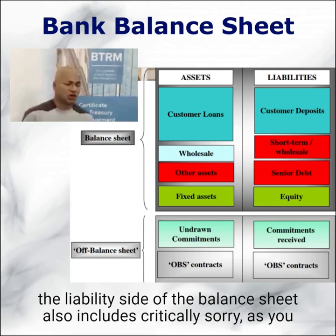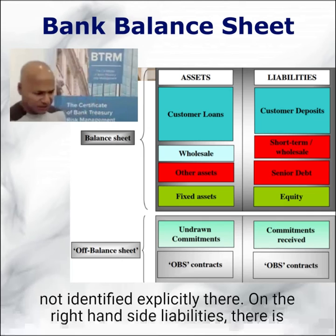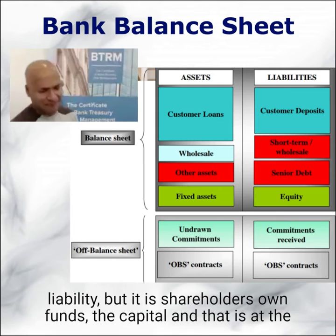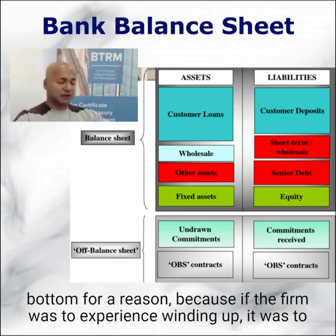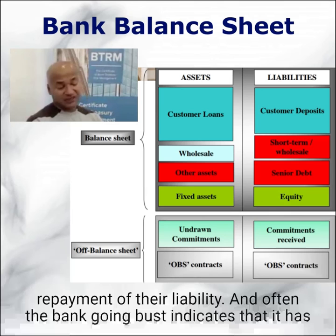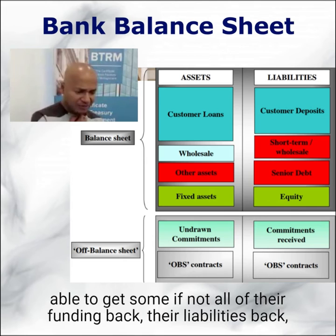But both sides of the balance sheet include critically two items not explicitly identified there. On the right-hand side liabilities, there is the equity and capital of the bank — it's a liability, but it is shareholders' own funds, the capital. That is at the bottom for a reason, because if the firm was to experience winding up, administration, or bankruptcy, they are at the bottom of seniority for repayment. Often the bank going bust indicates it's run out of capital — i.e. run out of equity — so the equity holders have lost all their investment, whereas higher up the level of seniority, they should be able to get some, if not all, of their funding back — their deposits back.